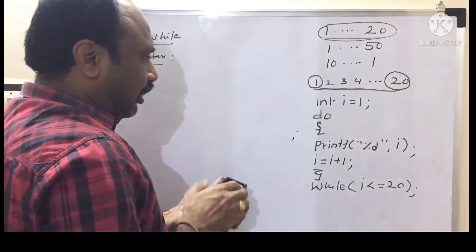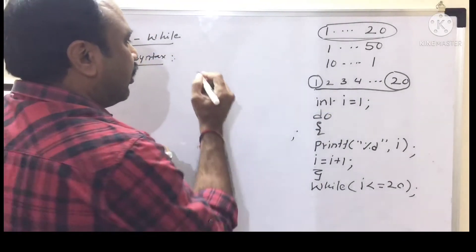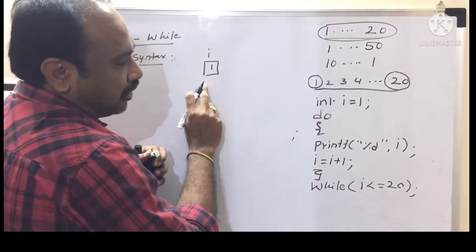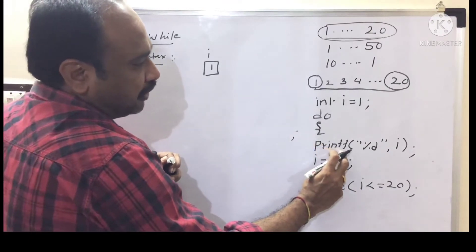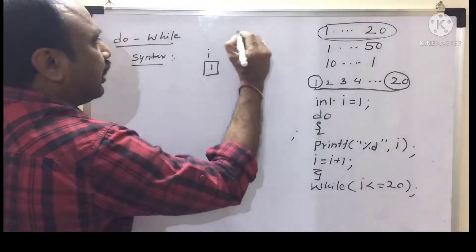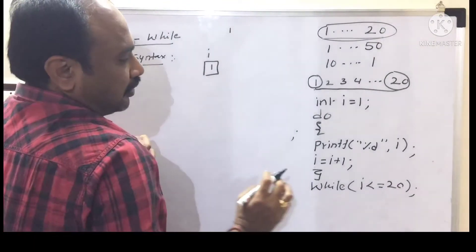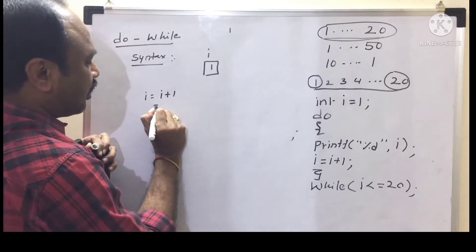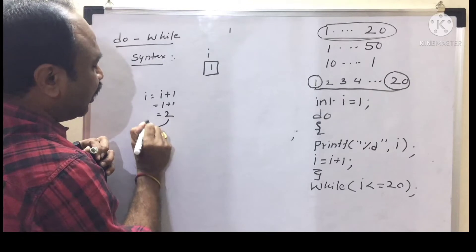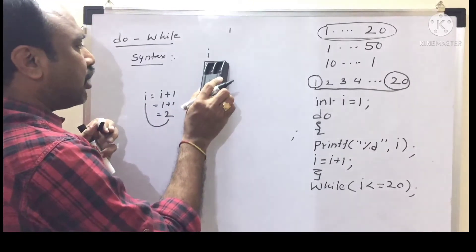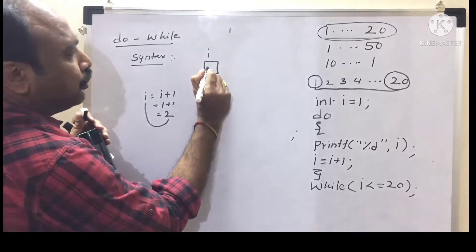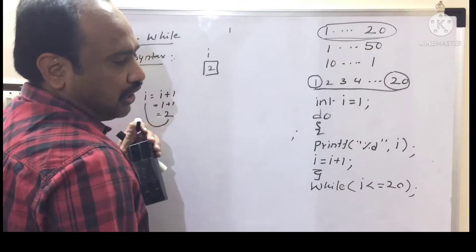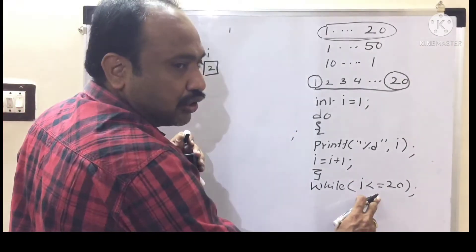Let me explain how it will execute. The initial value of i is 1. We enter do — print %d with i value 1, so 1 is printed. Then i = i + 1: substituting i value 1 plus 1 gives 2, stored under the name i. Now i becomes 2. Come to while: condition i <= 20. 2 less than 20 — condition is true.